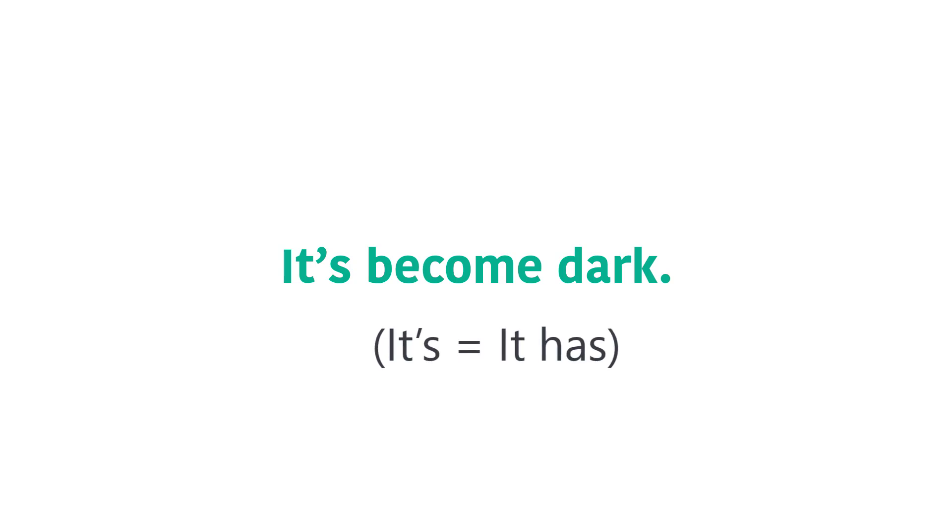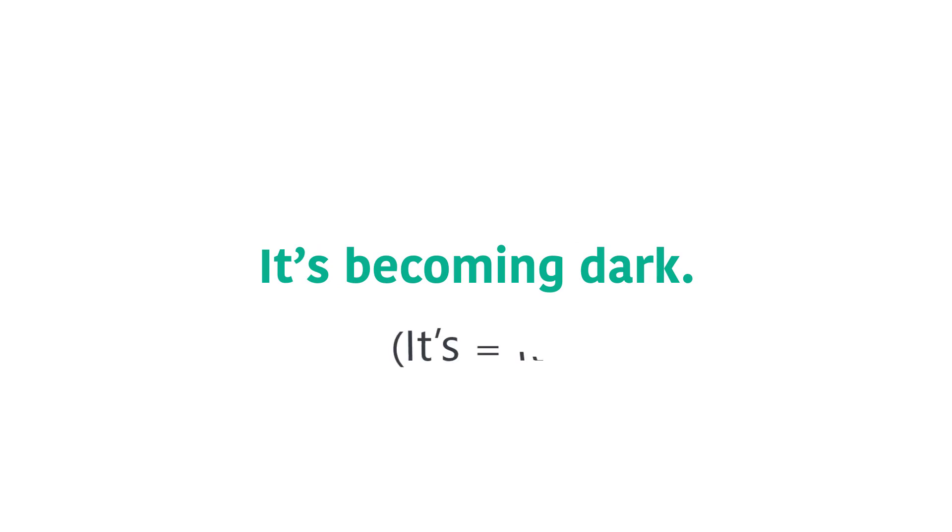It's become dark. It's become dark. Here it means 'it has.' It's becoming dark. It's becoming dark. Here it means 'it is.' It's getting dark. It's getting dark. It's got dark. It's got dark.